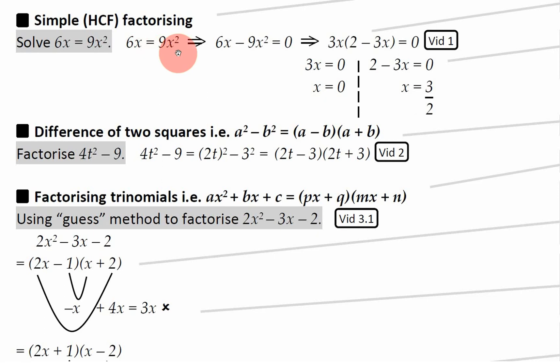So that the solution to 6x minus 6x equals 9x squared is x equals 0 and x is equal to 3 over 2 or 1.5.